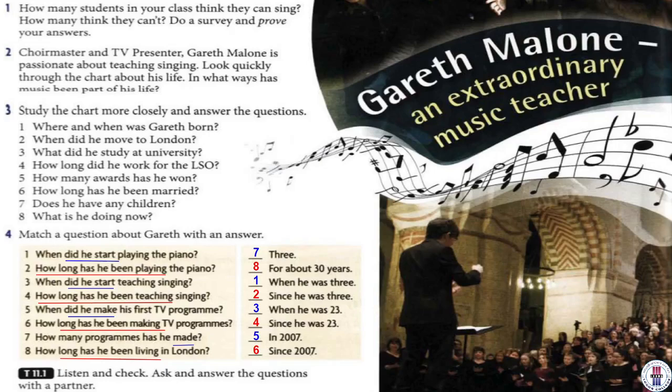The present perfect continuous talks about an event — something that starts in the past and still continues today, and is still happening today. Remember the past perfect? That was something that started in the past before another past event — those events started and finished in the past. But the present perfect continuous starts in the past but is still happening today. It's still going on today.